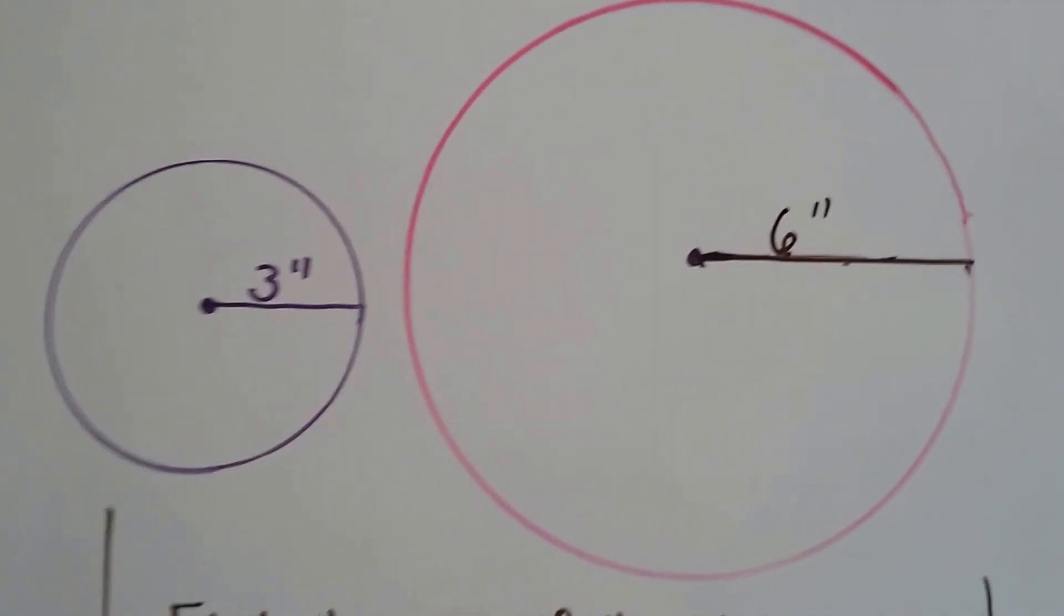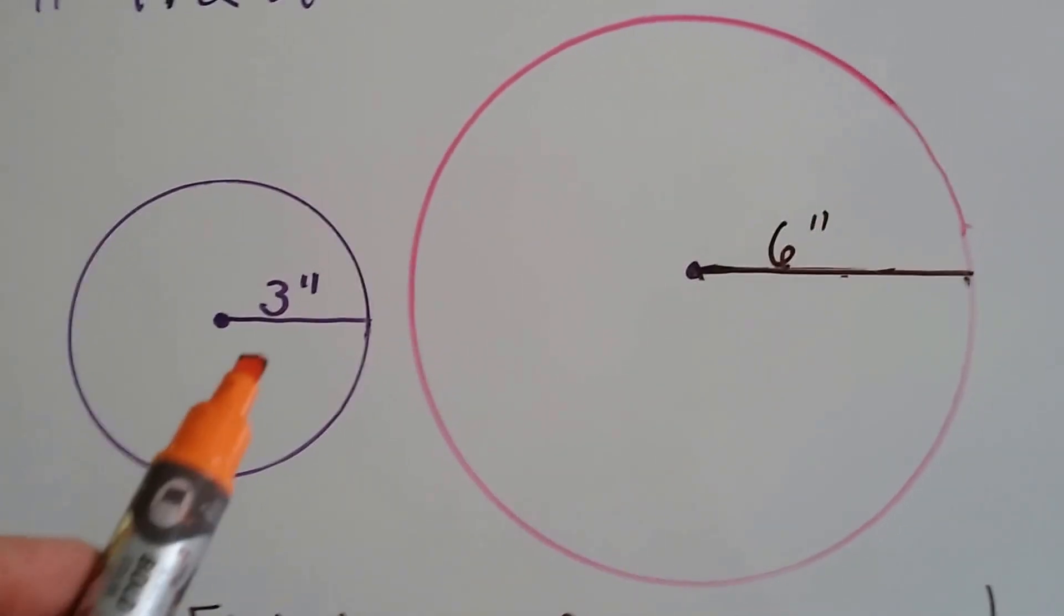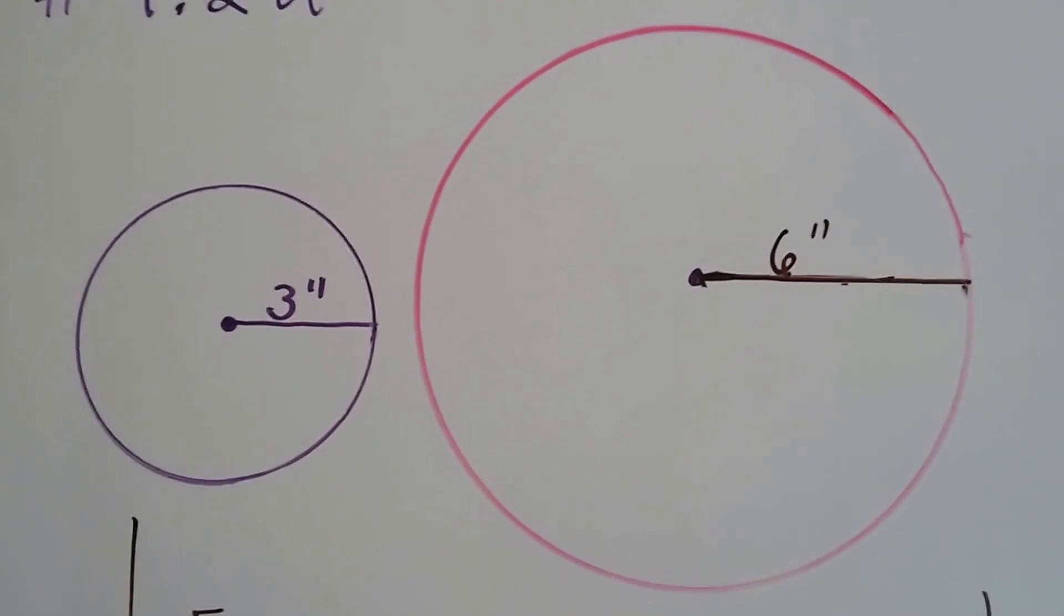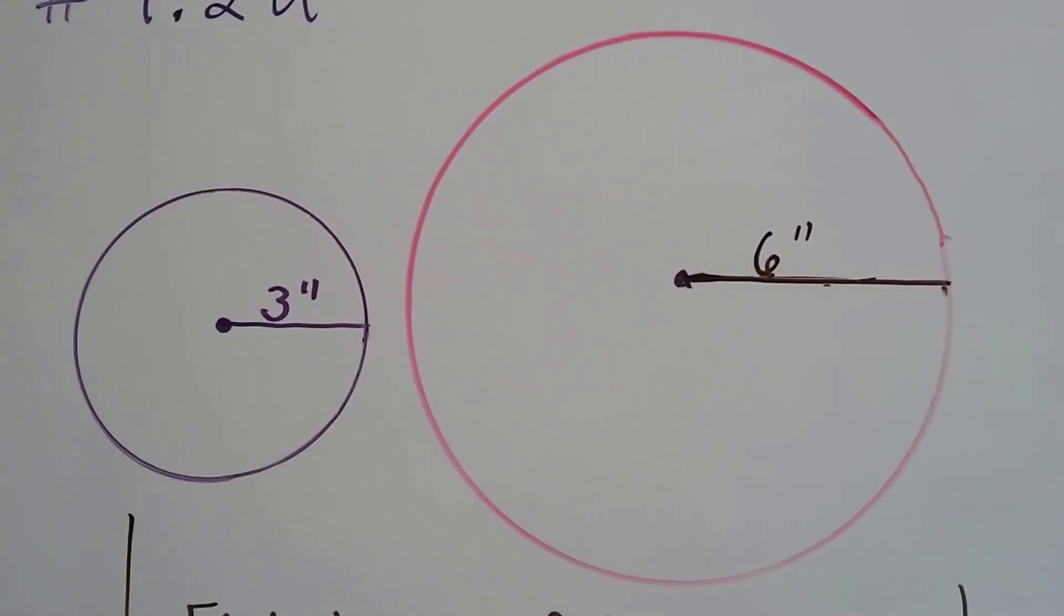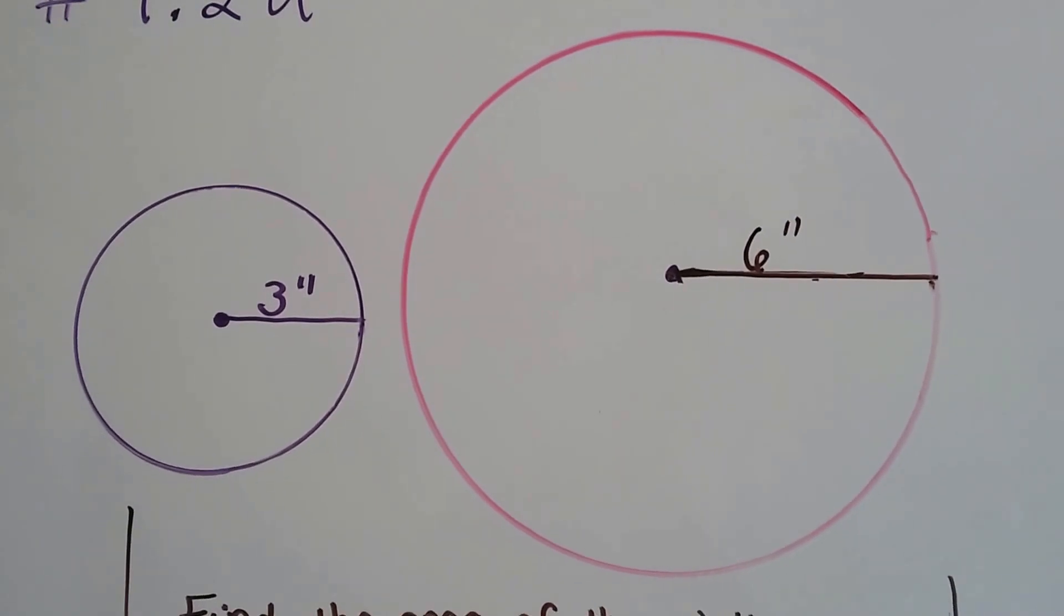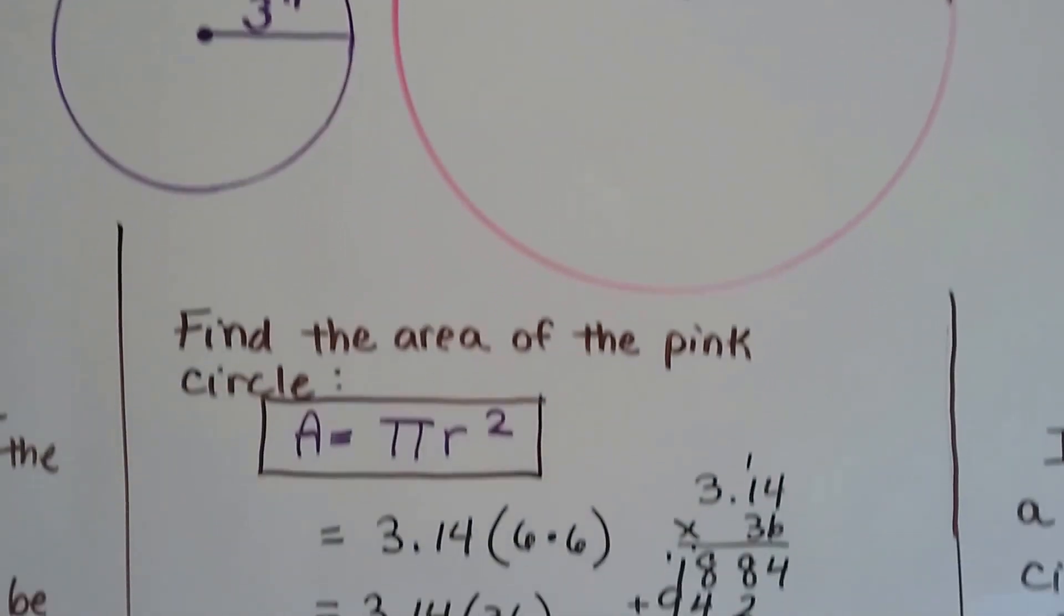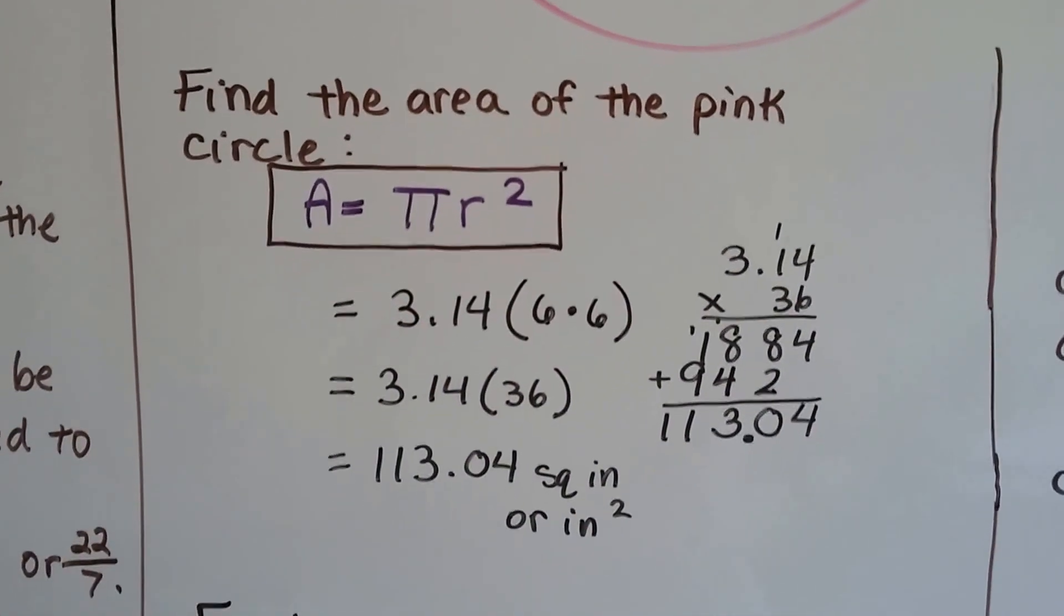Here's two circles that are side-by-side. This one has a 3-inch radius. This one has a 6-inch radius. How do you think they're going to compare to area? The 6-inch one is double the radius of the purple one. All right, well, find the area of the pink circle.